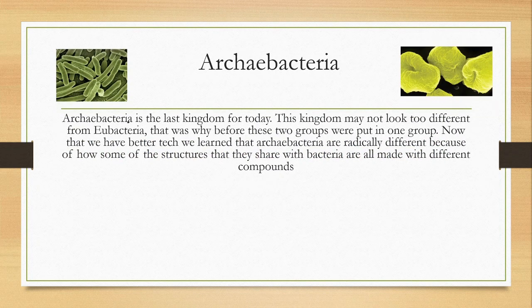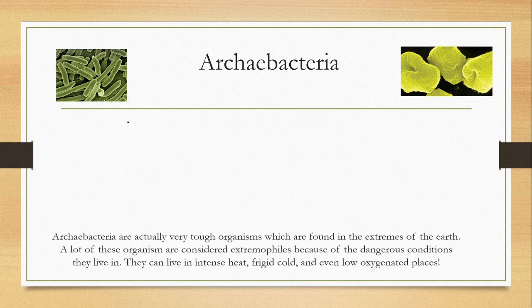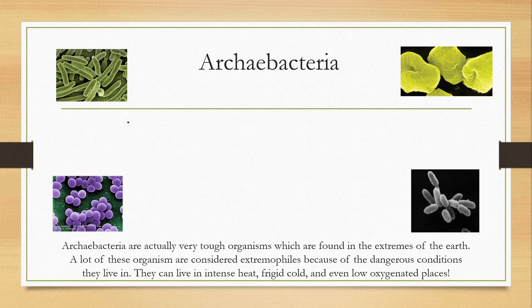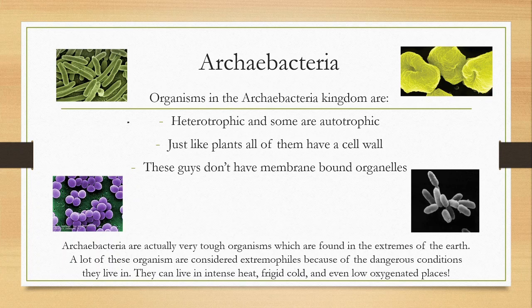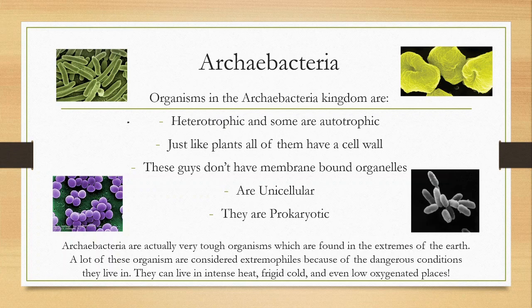Archaebacteria is the last kingdom for today. This kingdom may not look too different from Eubacteria, which is why before better technology, these two groups were actually put in one group. Now we know that Archaebacteria are radically different because some of their structures are made with different compounds. Archaebacteria are very tough organisms found at the extremes of the Earth — many are considered extremophiles because they live in dangerous conditions like intense heat, frigid cold, and even low-oxygen places. Organisms in the Archaebacteria kingdom are heterotrophic and some are autotrophic, all have a cell wall, do not have membrane-bound organelles, are unicellular, and are prokaryotic with their nucleus floating in the cytoplasm.